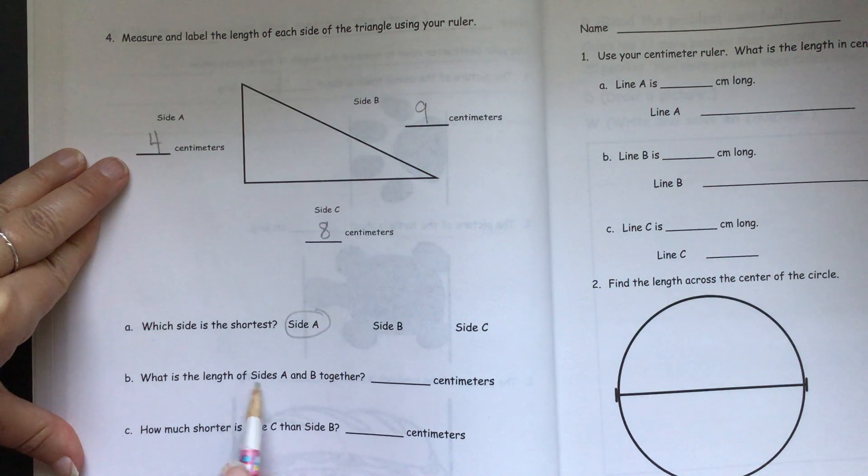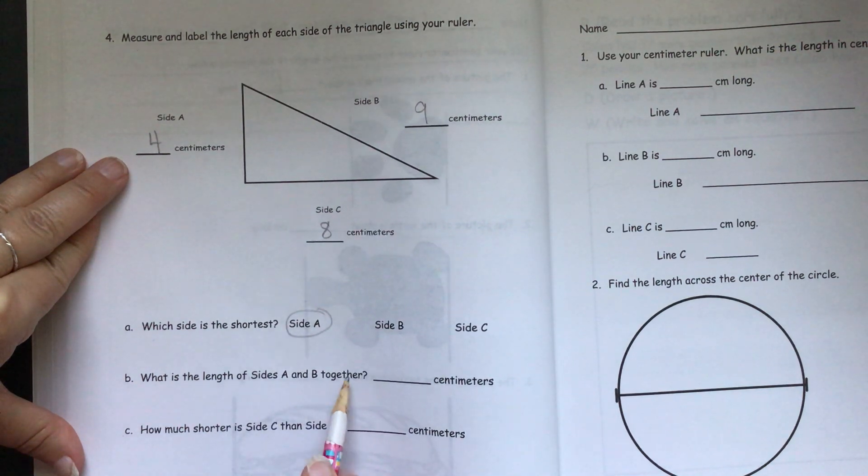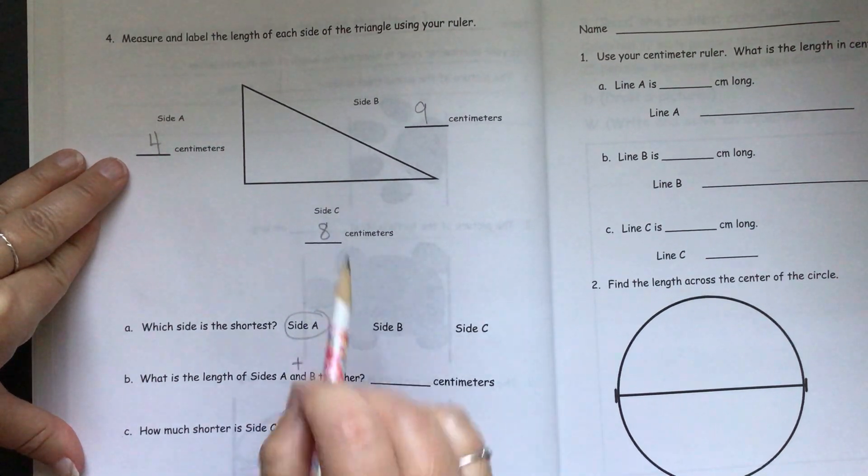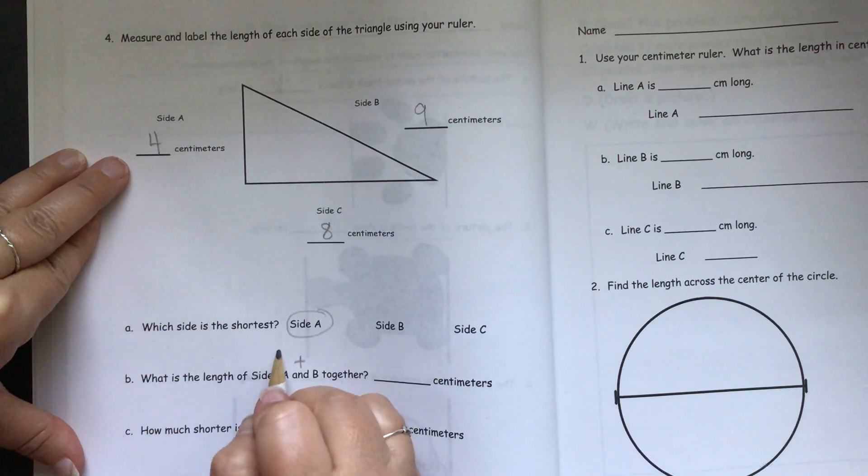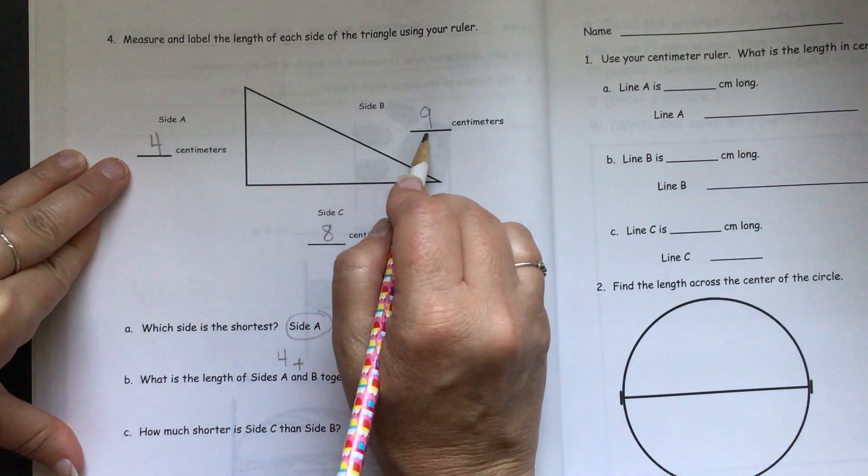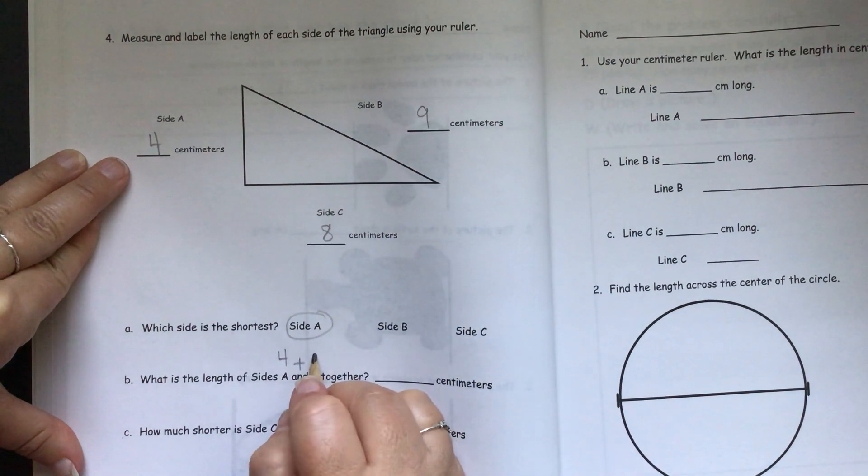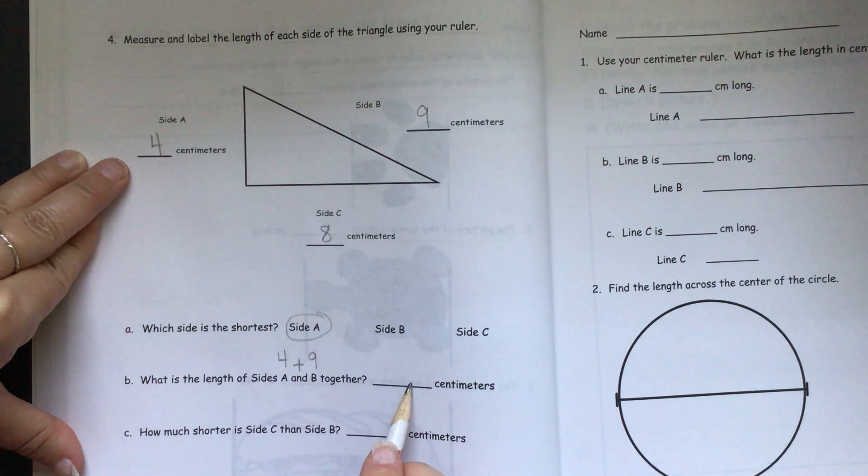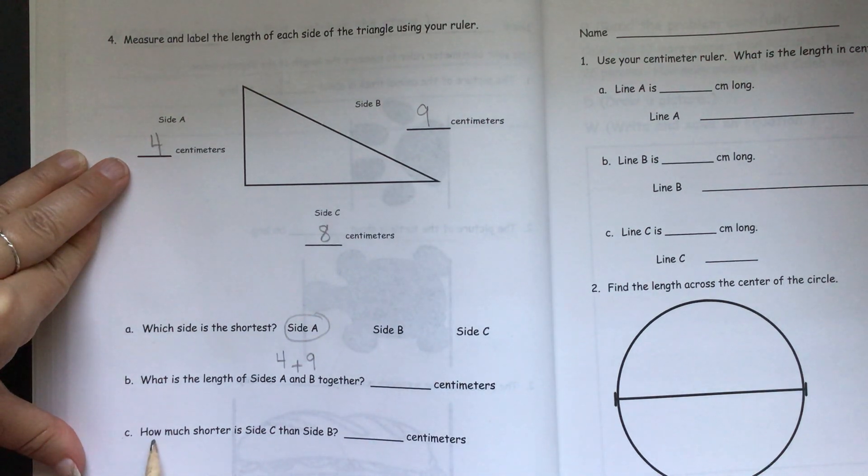What is the length of sides A and B together? And and together, it's going to tell us that we need to add. Side A is four, and side B is nine. So, we're going to have to add four plus nine to get this answer here. And I'm going to let you do that on your own.